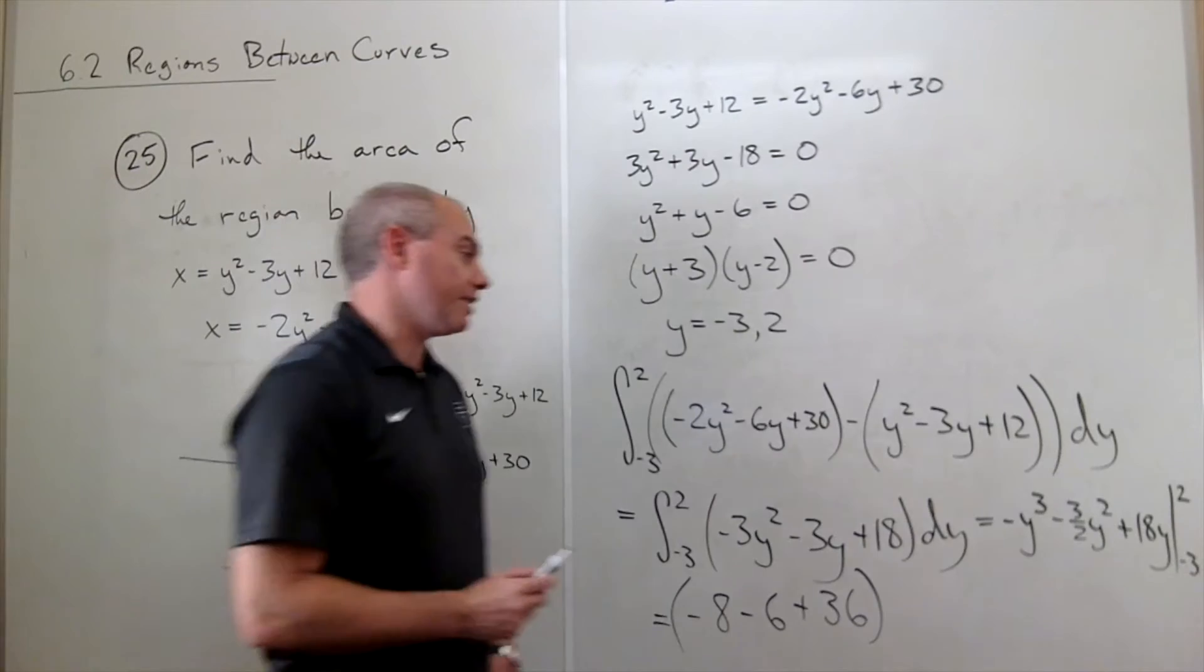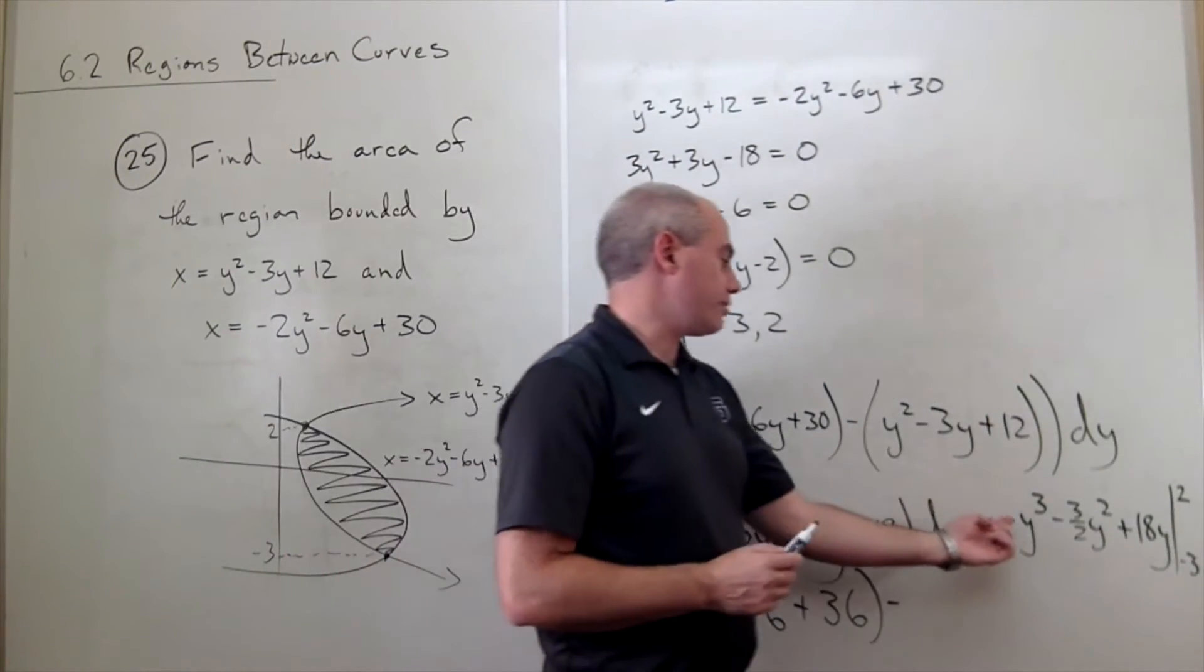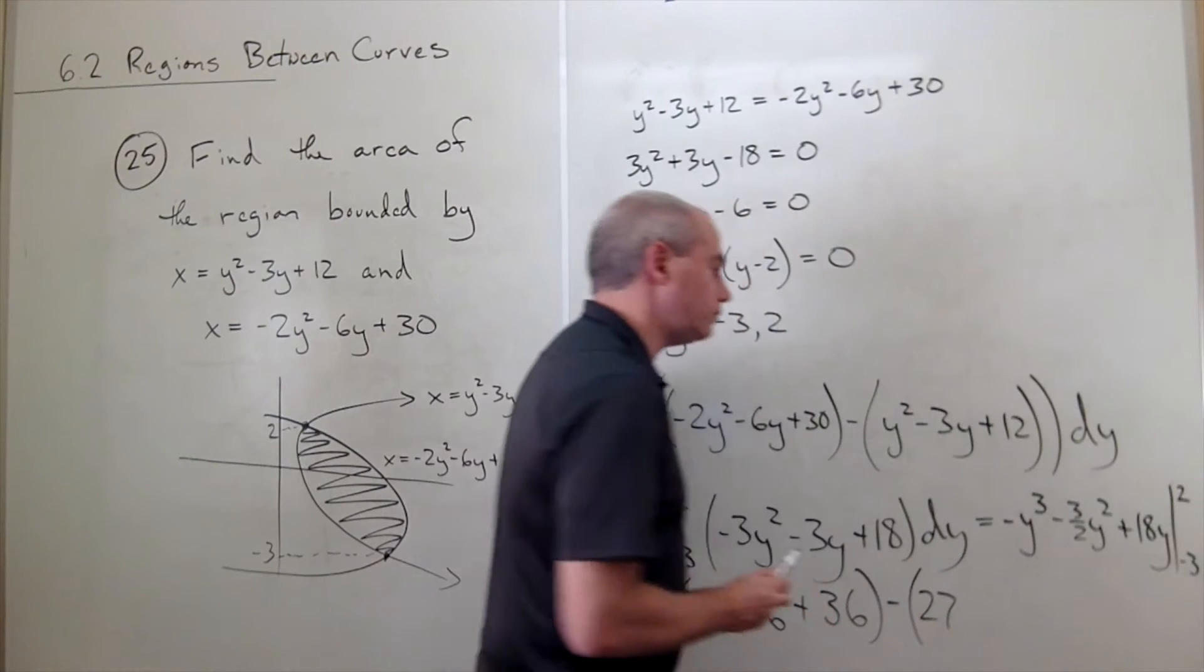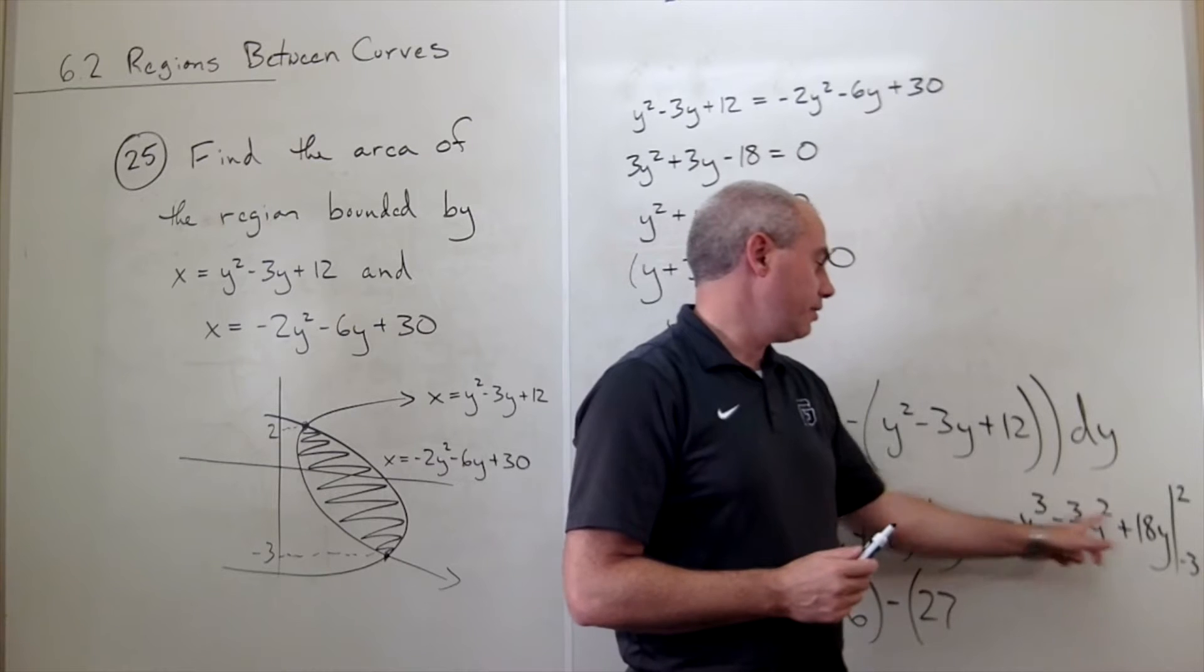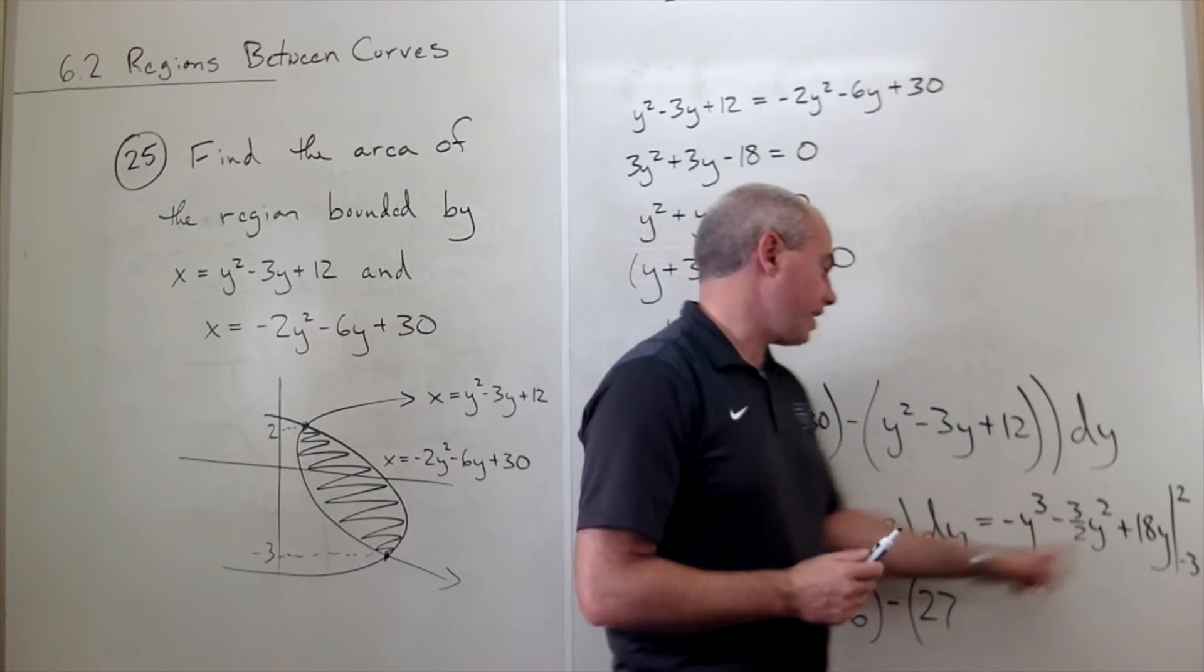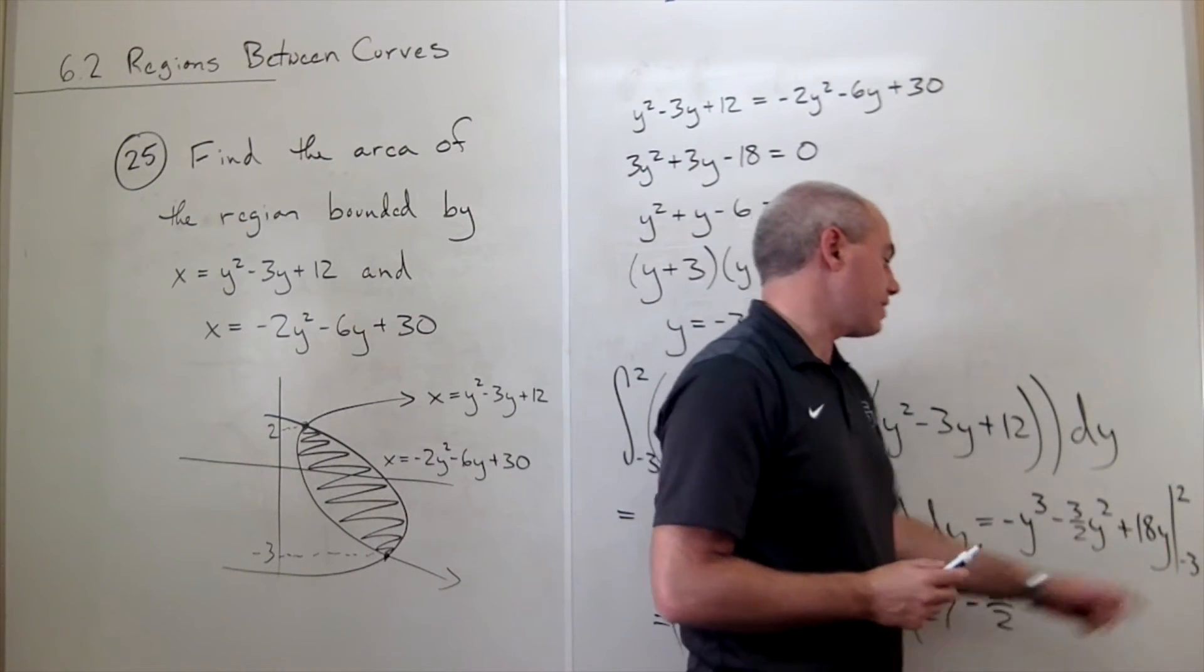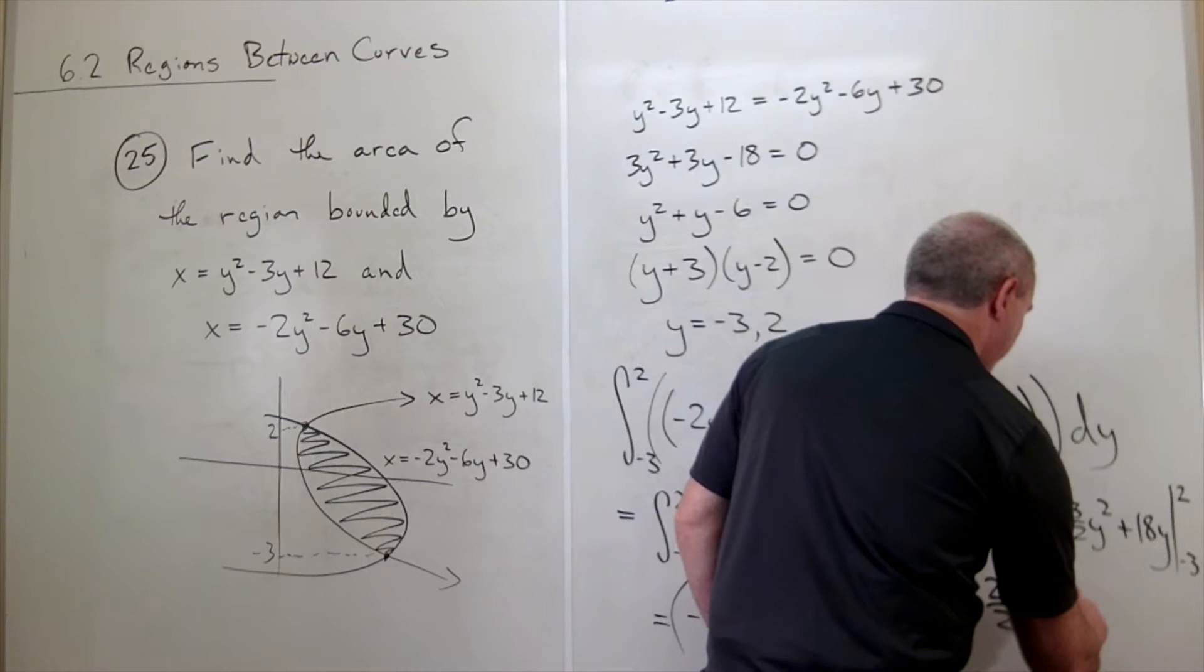Minus, now we plug in minus 3, we get minus 3 cubed, which is minus 27, times minus 1 is positive 27. We get minus 3 squared, which is 9, times 3 is 27, so it's minus 27 halves. And then finally we get minus 3 times 18, which is negative 54.